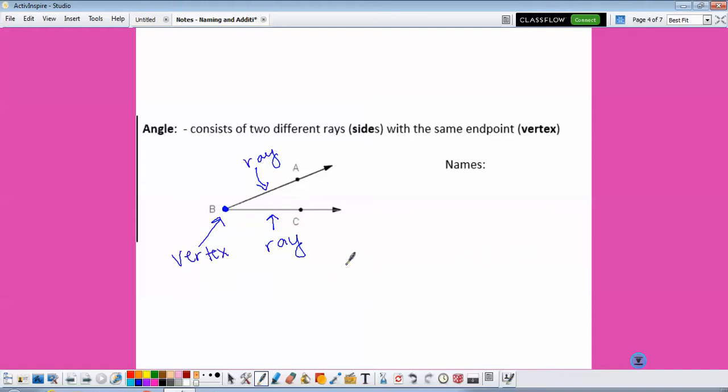So there's lots of different ways we can name angles. Typically we want to use the three letter names. So we start on one of the rays, go to the vertex, and then go to the other ray. So it could be angle ABC. It also could be angle CBA if we start on the other ray. Since there's no other angles in this picture, we could also just name it by its vertex and say it's angle B.